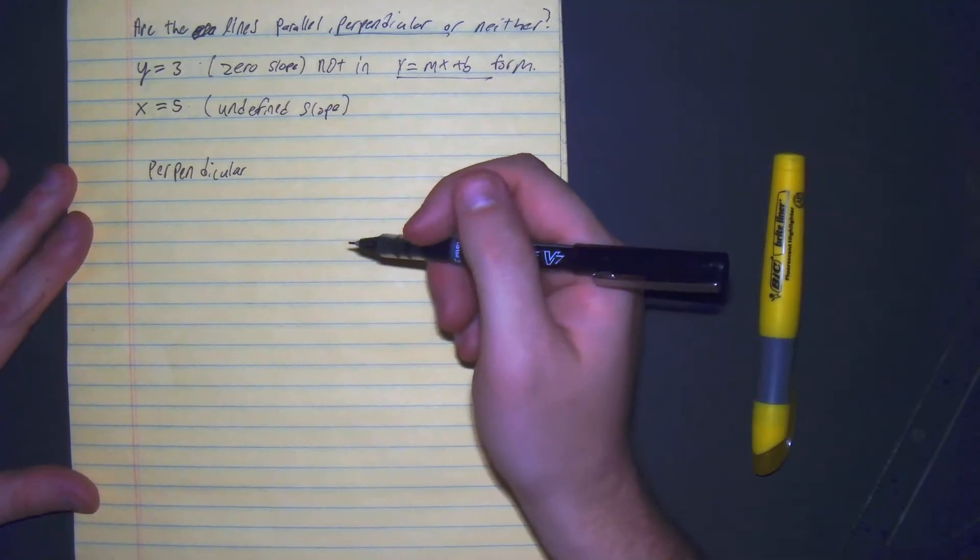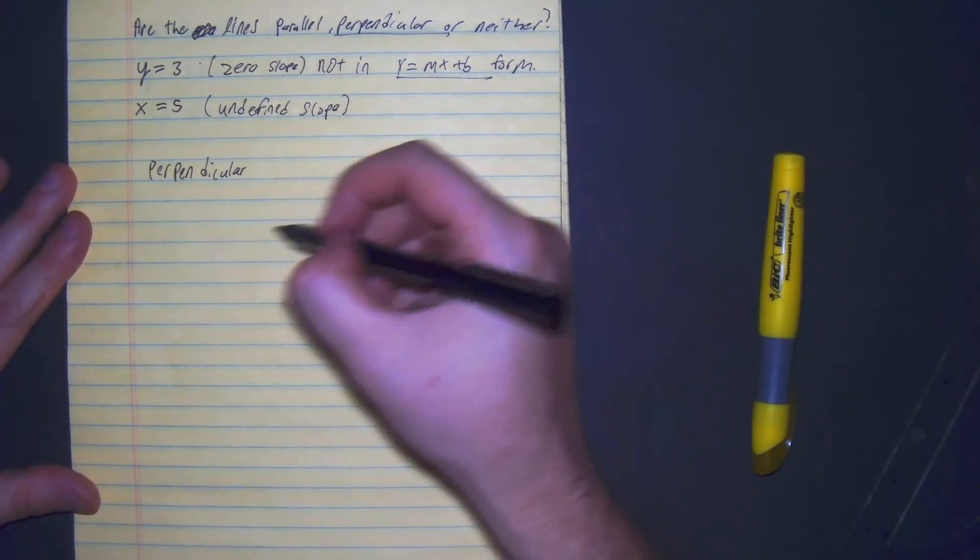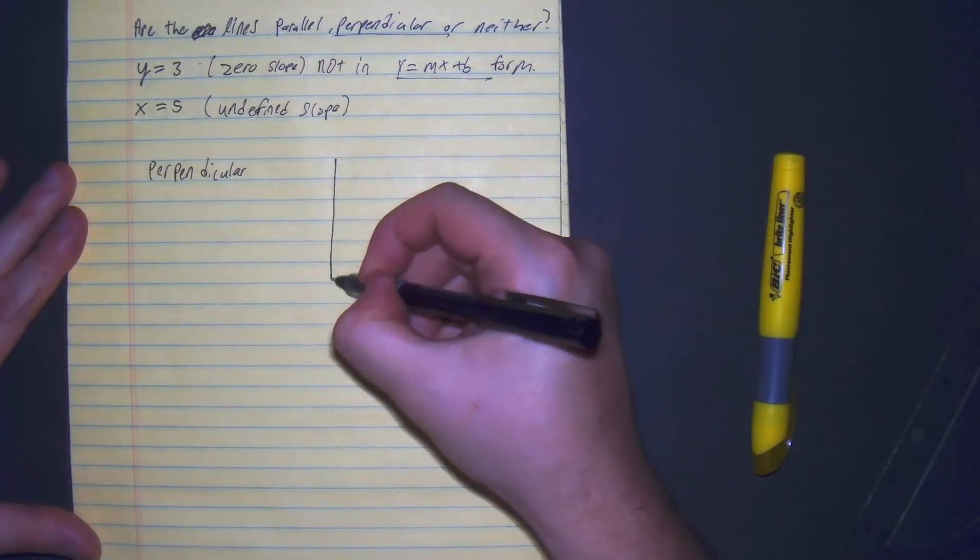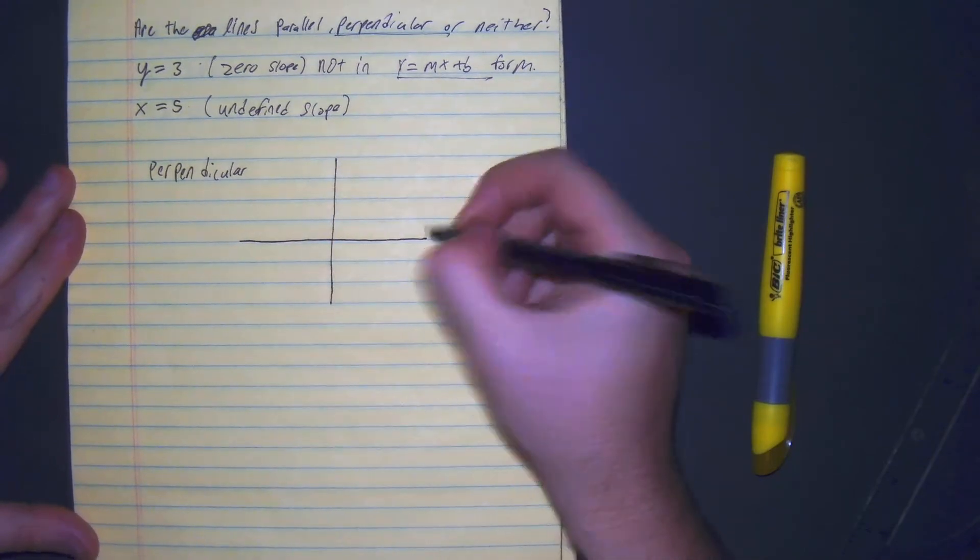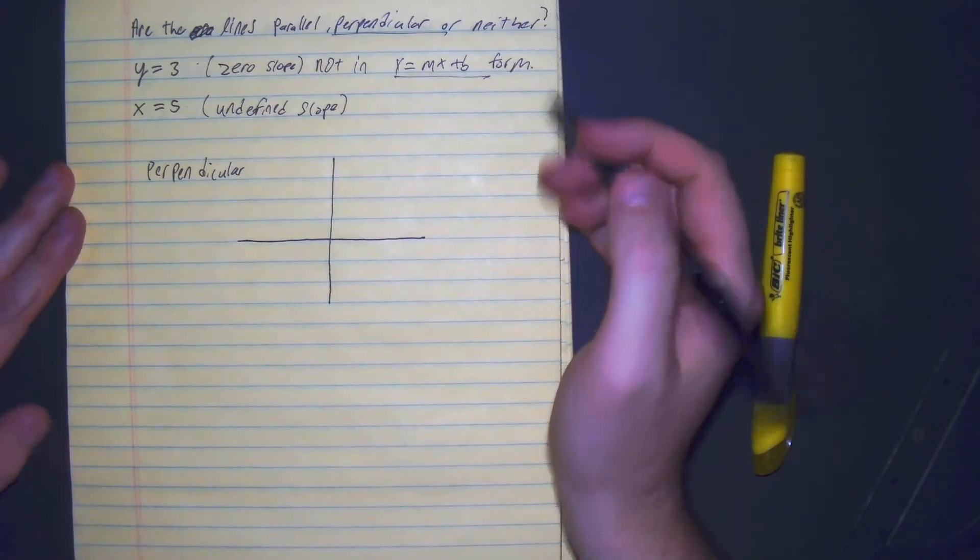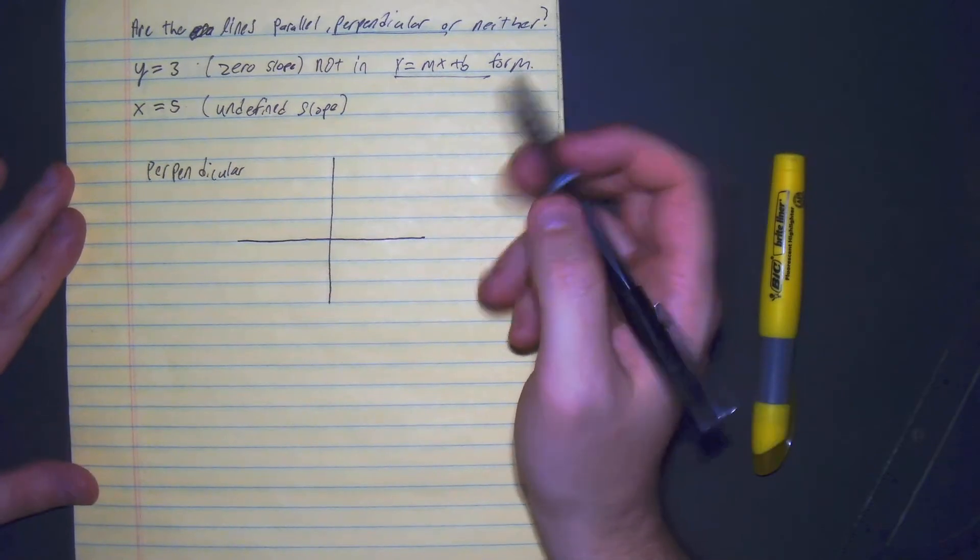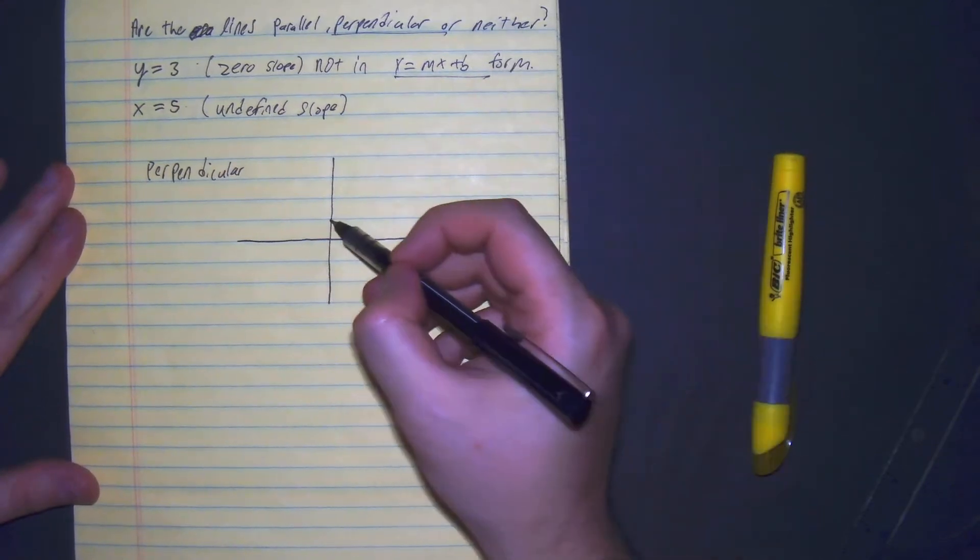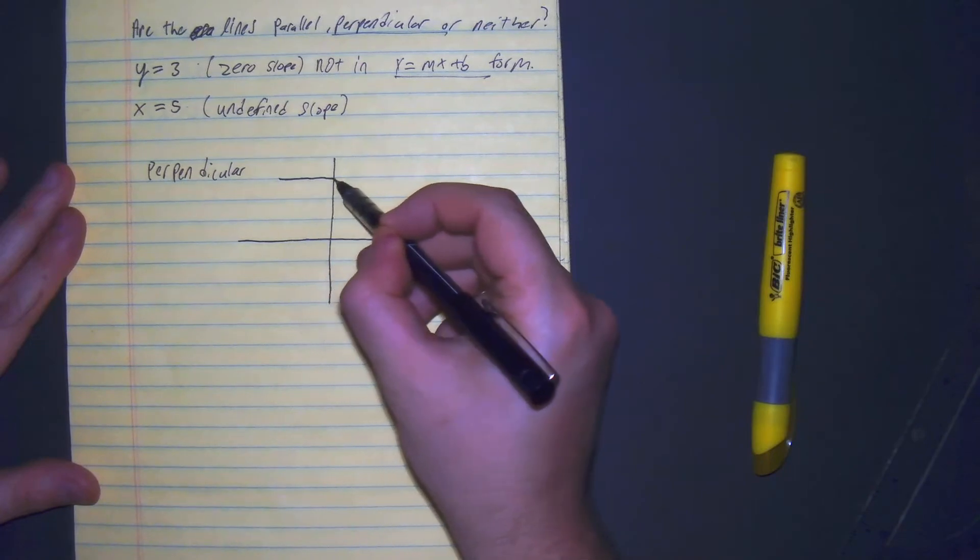So zero slope is going to be looking like this. Let me graph them. That means it does not go up or down, it just stays the same. So y equals 3, so it goes up 3 - 1, 2, 3. So it looks something like this.